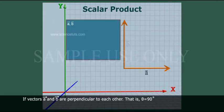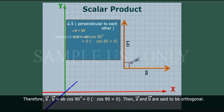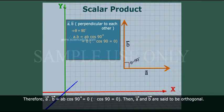If vectors A bar and B bar are perpendicular to each other, that is, theta is equal to 90 degrees, then A bar dot B bar is equal to AB cos 90 degrees, which is equal to zero, since cos 90 is equal to zero. If A bar dot B bar is equal to zero, then A bar and B bar are said to be orthogonal.